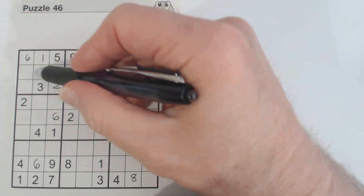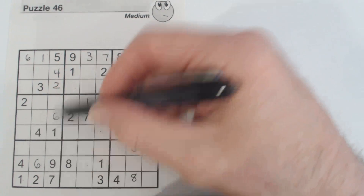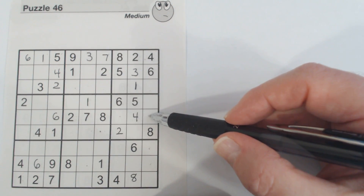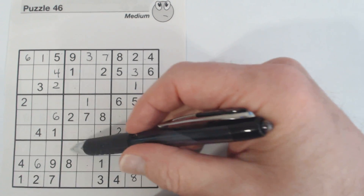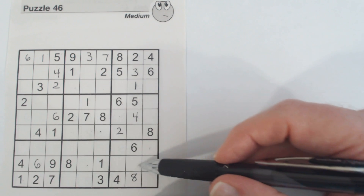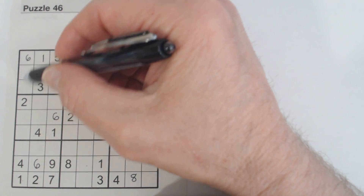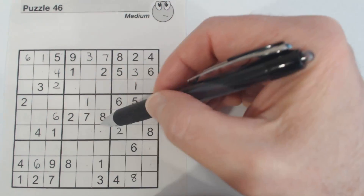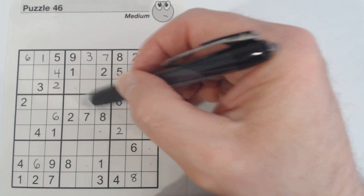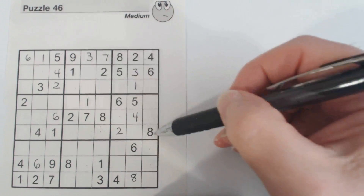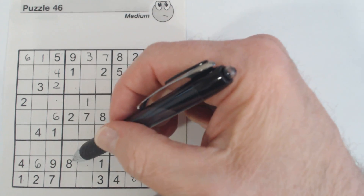Continuing with 7s: we know one of these is a 7 and one of these is a 7. For the 8s: one of these is an 8, one of these is an 8, one of these is an 8. Here's an 8 — working through the 8 placements across sections.